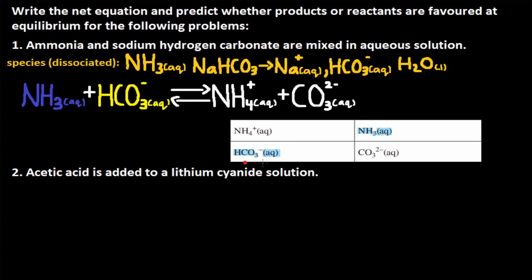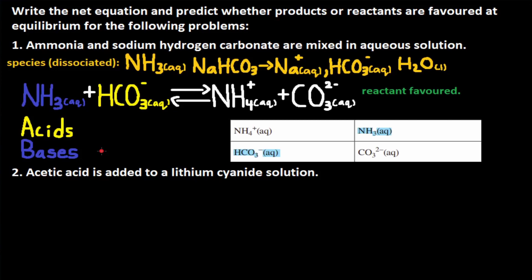To determine whether products or reactants are favored, I like to remember this alphabetically: A comes before B, so acids are listed before bases; and P comes before R, so products come before reactants. If the acid is higher than the base in the table, the reaction is product favored. If the base is higher than the acid, the reaction is reactant favored. NH3 is our base and it is higher up than HCO3⁻, our acid, so this reaction is reactant favored.